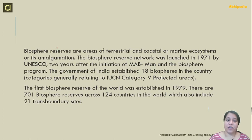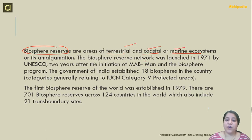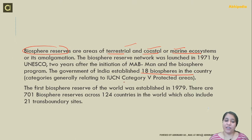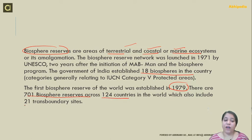The Biosphere reserve network was launched in 1971 by UNESCO. The Government of India has established 18 Biosphere reserves in the country. These generally relate to IUCN Category 5 protected areas. The first Biosphere reserve of the world was established in 1979. There are 701 Biosphere reserves across 124 countries in the world, which also include 21 transboundary sites.